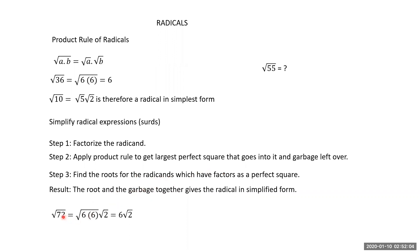For root of 72: the largest perfect square factor is 36 — dividing 72 by 2 gives 36 × 2. So root of 72 = root of 36 × root of 2 = 6 root 2. That is the simplified form.